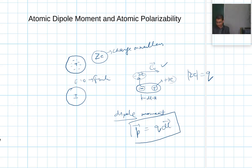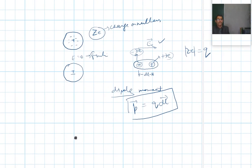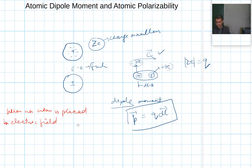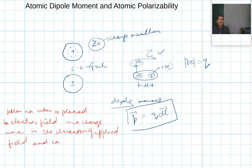So dipole moment is q·dl, and this dipole moment is known as atomic dipole moment. When an atom is placed in an electric field, the positive charge moves in the direction of the applied field, and the center of negative charge moves in the opposite direction.